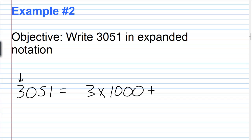Then plus, we move to the next digit to the right, and that's a 0. When you're writing a number in expanded notation and one of the digits is a 0, you can just skip that place. The reason you can do that is because the 0 is in the hundreds place — if I put 0 times 100, it's not going to matter because when I do the multiplication it's going to drop out. 0 times any number is always 0, and 0 plus any number is just that number.